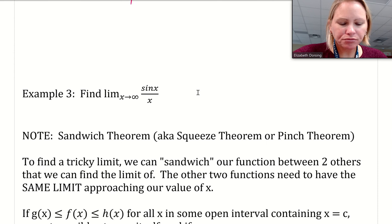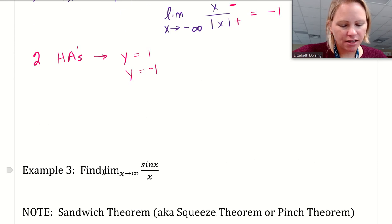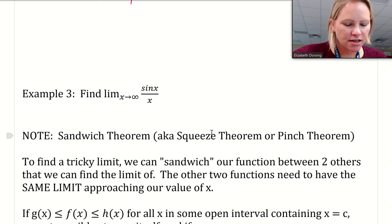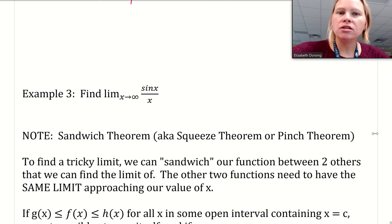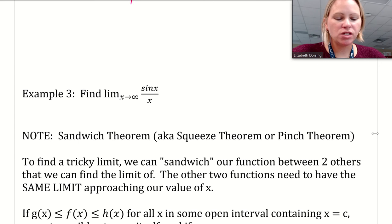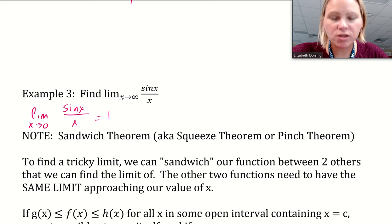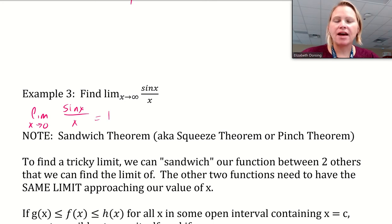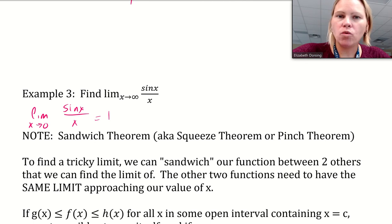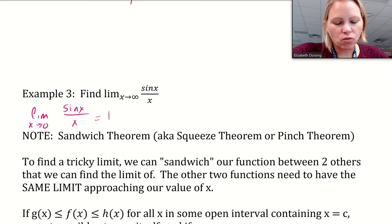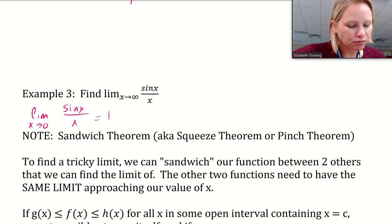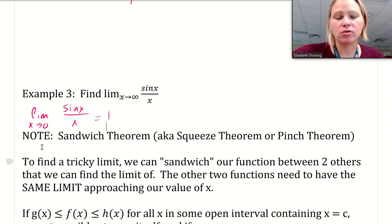There are times when looking at the graph is sufficient, but most of the time finding those limits analytically without a graph is the way to go. Pulling exact values off the graph isn't ideal — what if the asymptote was actually at 1.1? We wouldn't necessarily get that from the graph. Finding the exact value analytically is the best approach. Now let's look at the limit as x approaches infinity of sine x over x.